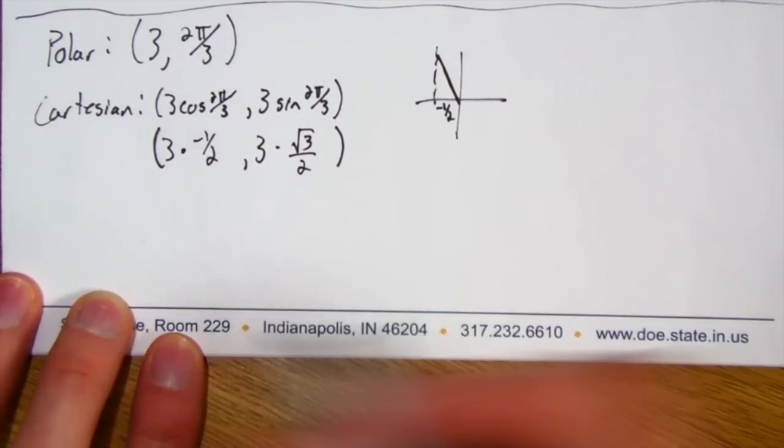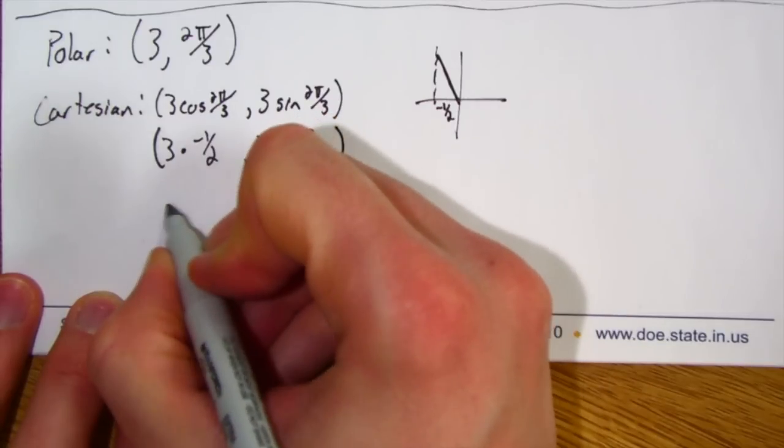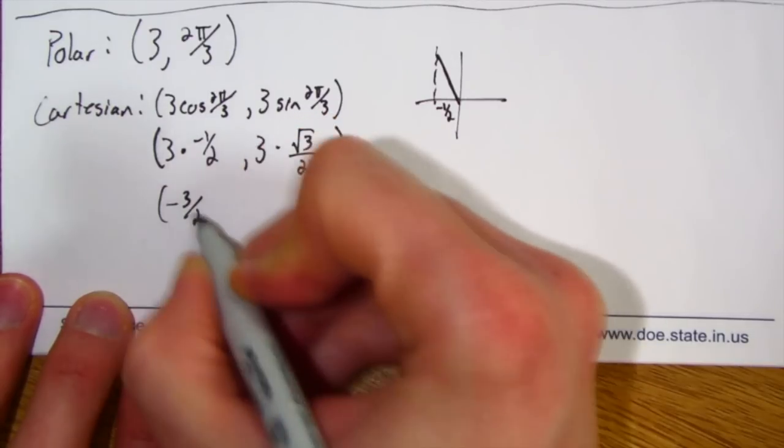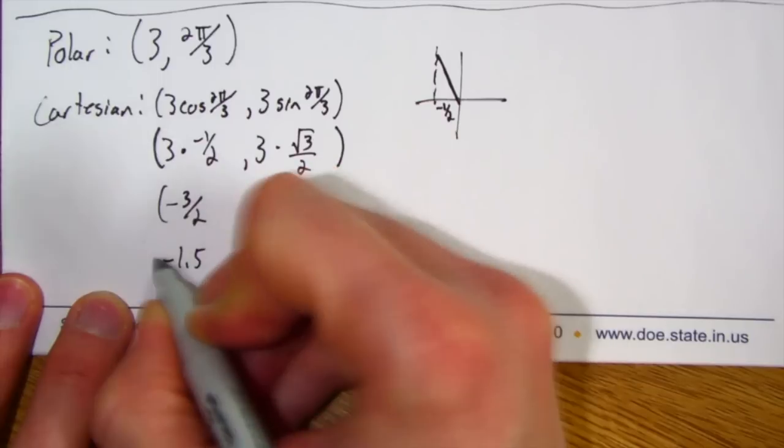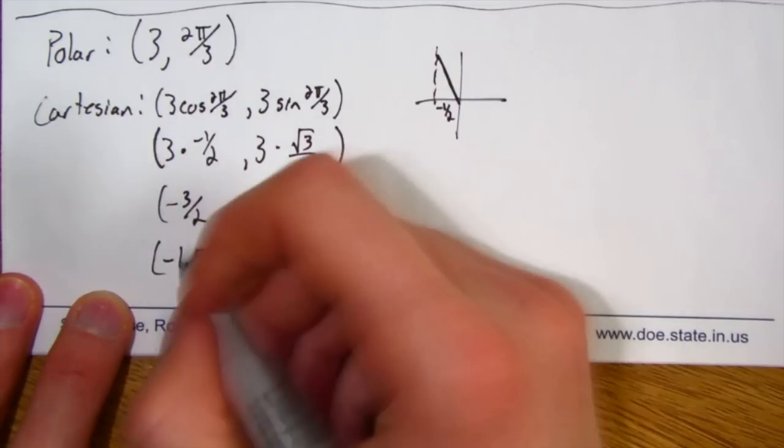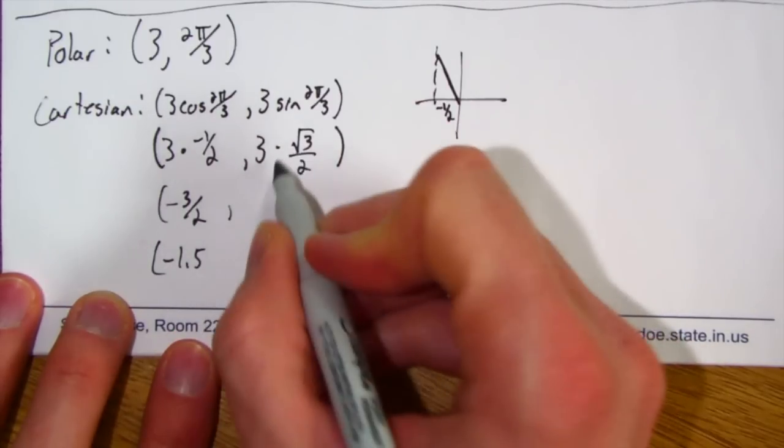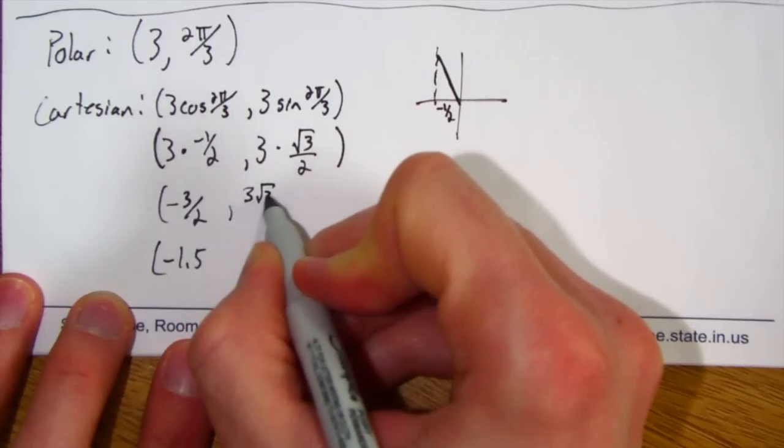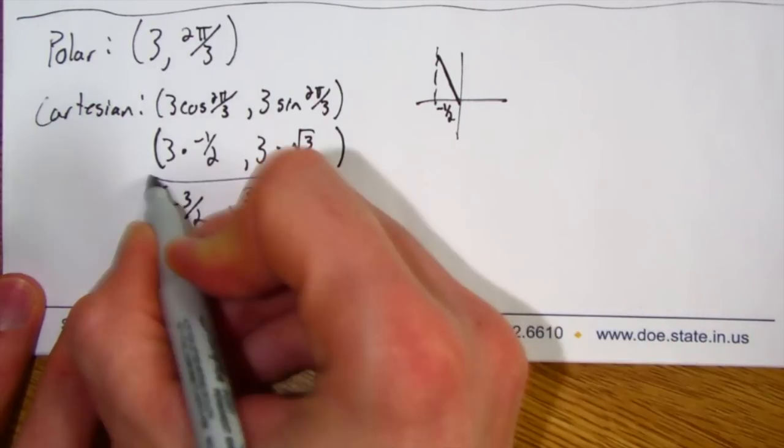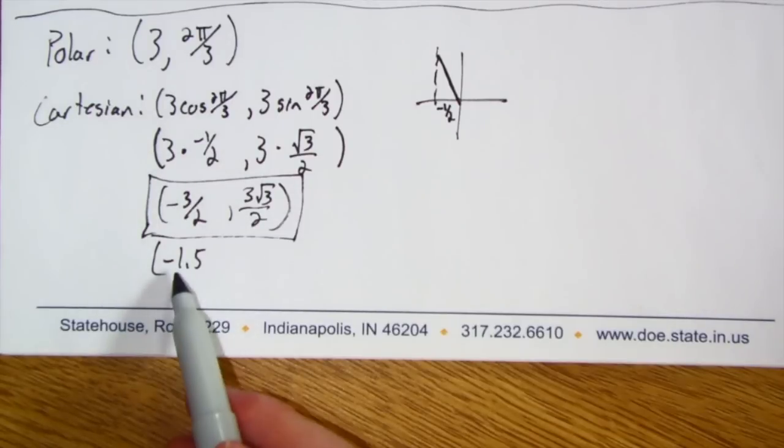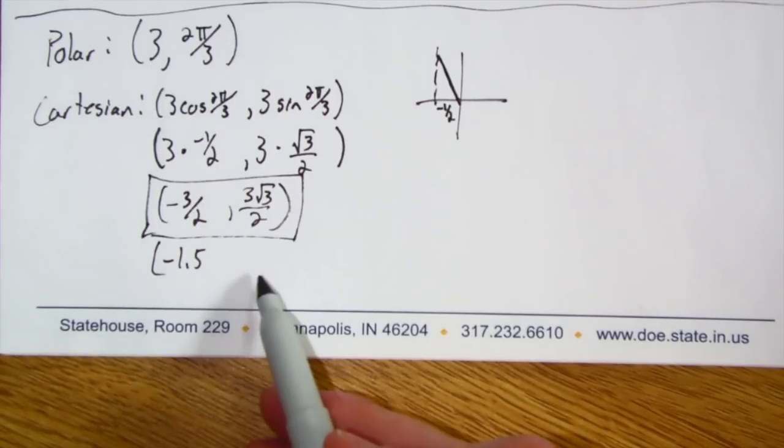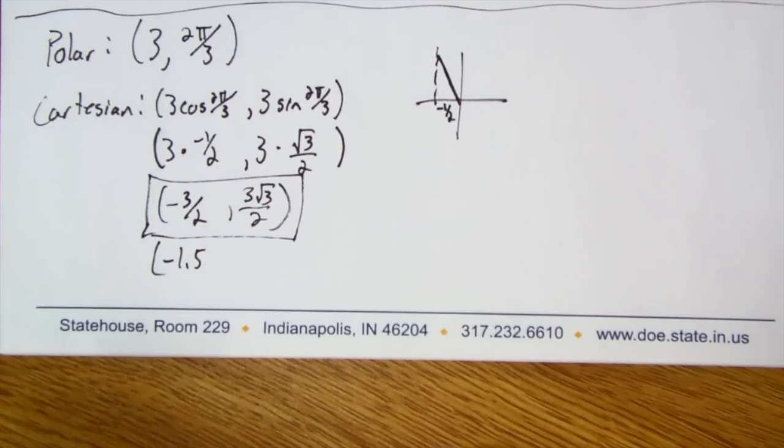So now I just multiply that out. So I'm going to get negative 3 halves, which is the same thing as negative 1.5. That would be fine either way. Technically, you want to stay consistent, though. So since I know this one's going to have to remain a fraction, 3√3 over 2, I probably want to leave it in fraction form instead of having one to be a decimal and one to be a fraction. Hopefully polar to Cartesian works pretty well.